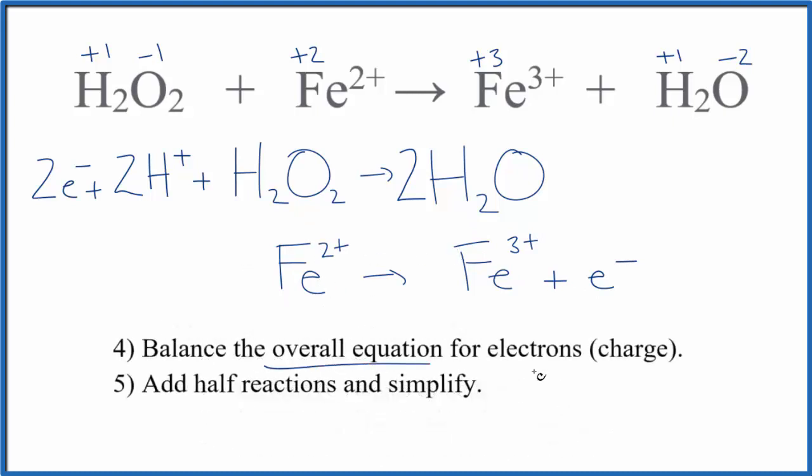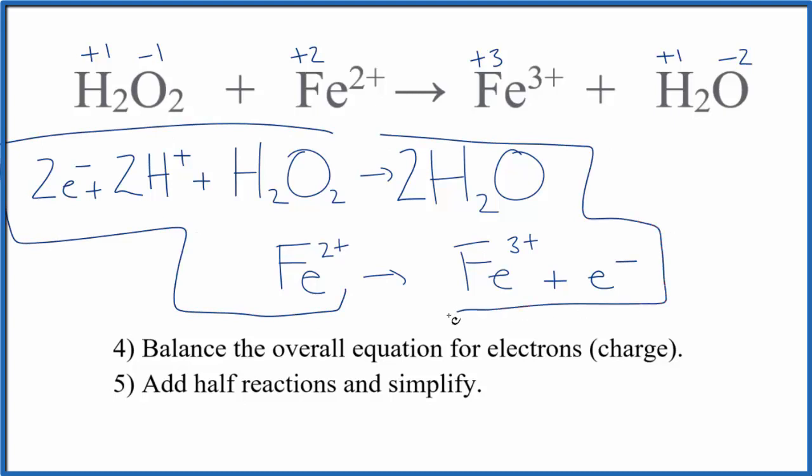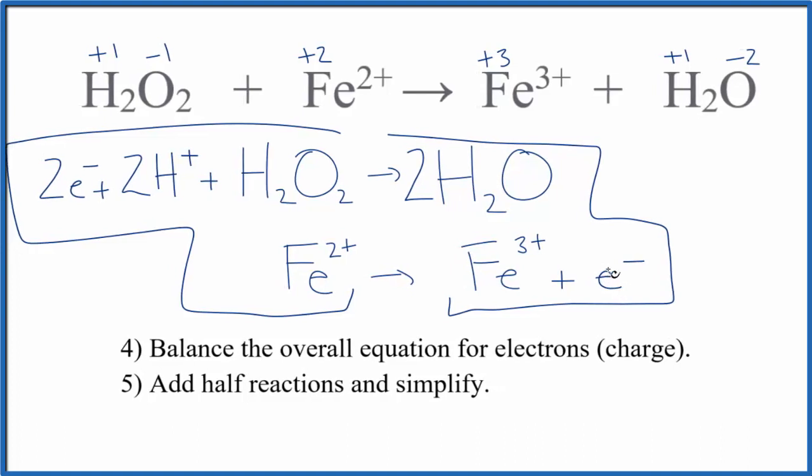Now we need to balance the overall equation for charge. So if you think about it here, all of these right here, these are the reactants and these are the products. So these react here to form these. We have two electrons here and just one here. That's not balanced. With redox we're balancing the atoms and the charge. So here's how we fix that.